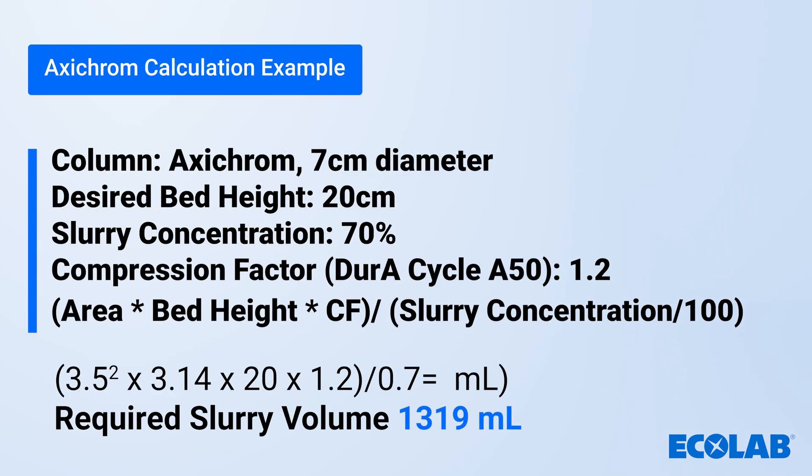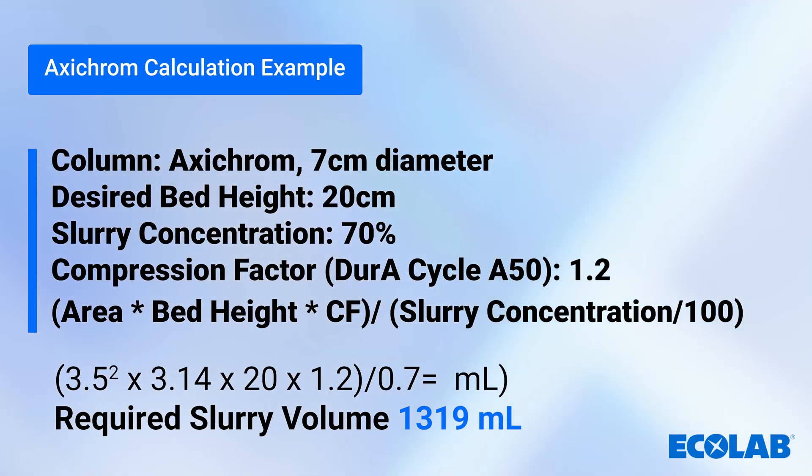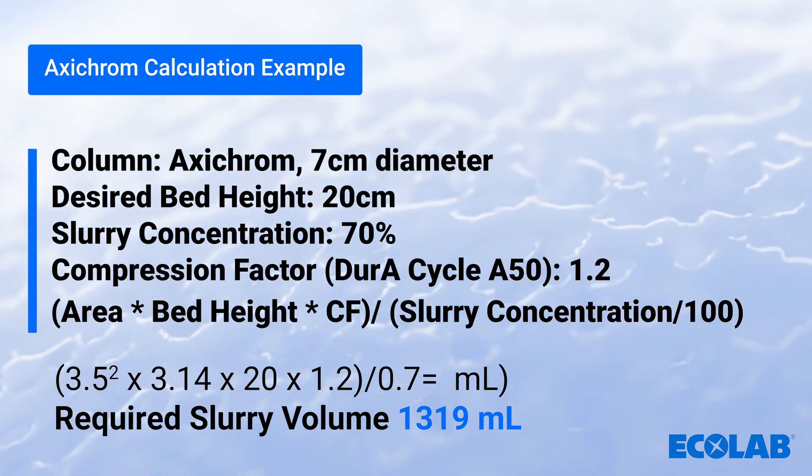For the 7-centimeter ID axiom column packed in this instructional video to a 20-centimeter bed height using a compression factor of 1.2, the required volume of slurry with a 70% slurry concentration is 1,319 milliliters.